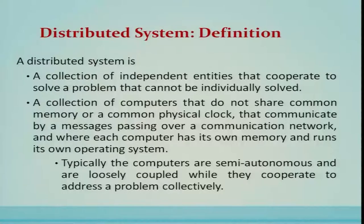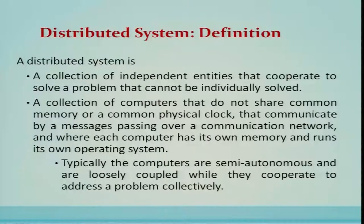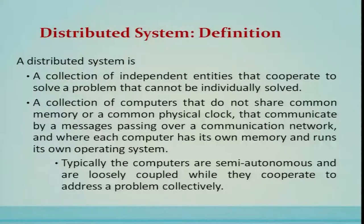Distributed Systems definition: a distributed system is a collection of independent entities that cooperate to solve a problem that cannot be individually solved. In contrast to a centralized system, it is also defined as a collection of computers that do not share common memory or a common physical clock, that communicate by message passing over a communication channel, and where each computer has its own memory and runs its own operating system. Typically, computers are semi-autonomous and loosely coupled while they cooperate to address the problem collectively.